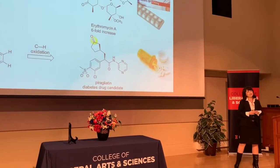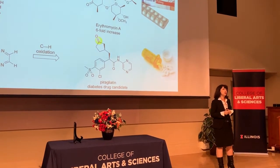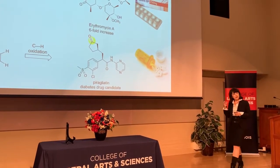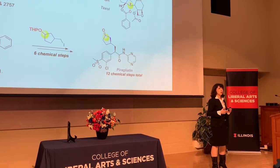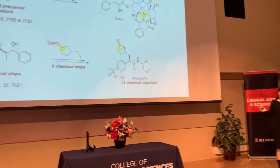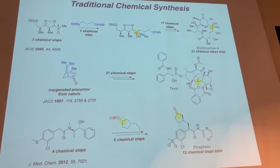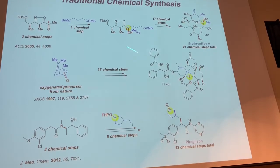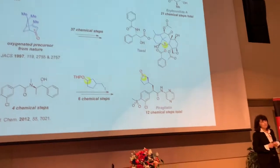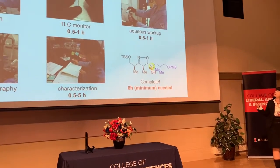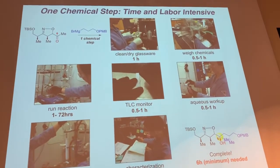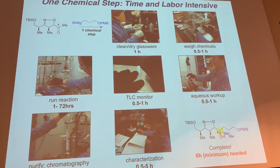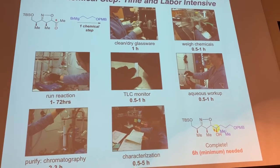So the question is: how do we, as synthetic chemists who make molecules, introduce this oxidized functionality into complex molecules? We do it through a process known as de novo synthesis—starting with small building blocks, often oxidized from nature, through laborious multi-step processes. What does 37 chemical steps mean? Each chemical step is a very time- and labor-intensive process, taking up to half a day or more. So the question becomes: is there an easier way to introduce this oxidized functionality?